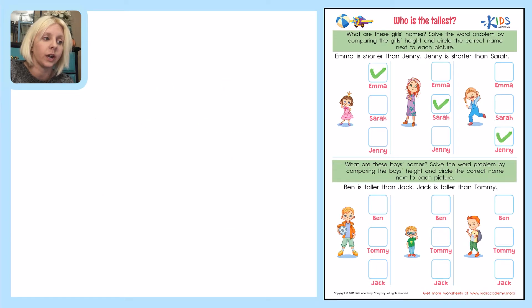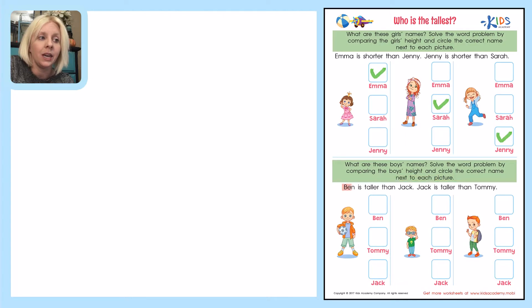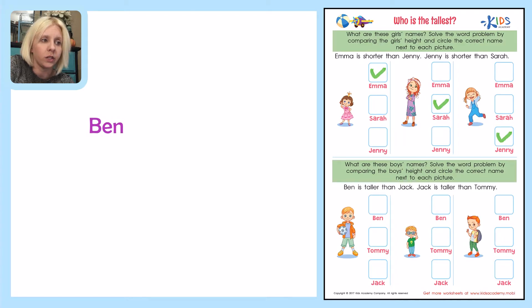Let's go down to the next one. The next one says: what are these boys' names? Solve the word problem by comparing the boys' height and circle the correct name next to each picture. We're going to do something similar with our boys here. It says Ben is taller than Jack, and Jack is taller than Tommy. So let's first write out the initials for our names — we've got B for Ben, J for Jack, and T for Tommy.